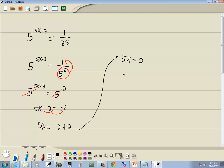And last step, divide both sides by a number in front of your x, which is 5. And we're going to get x equals 0 divided by 5 is 0.